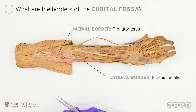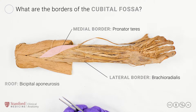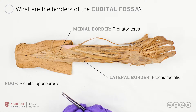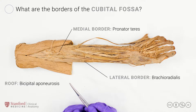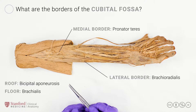The roof of the cubital fossa, which has been dissected away so that we can see its contents, is the bicipital aponeurosis — one of the two distal attachments of the biceps muscle. If we were to remove the contents of the cubital fossa, we would see that its floor is formed by the brachialis muscle, which originates more proximally on the humerus.